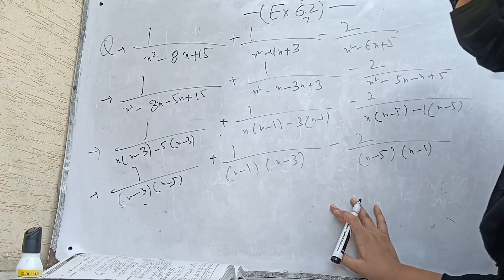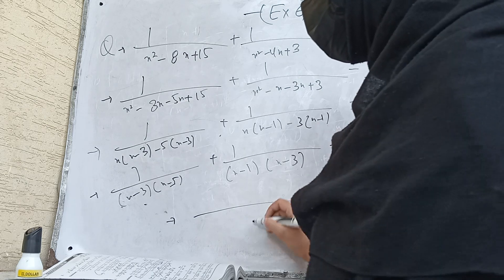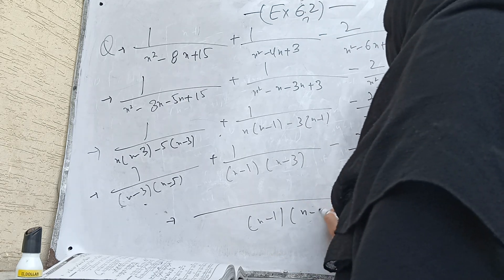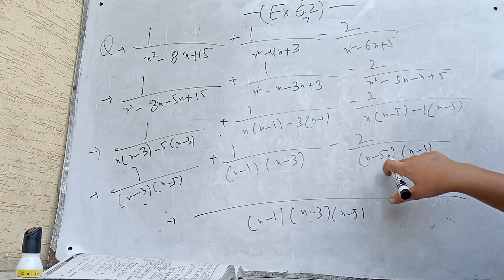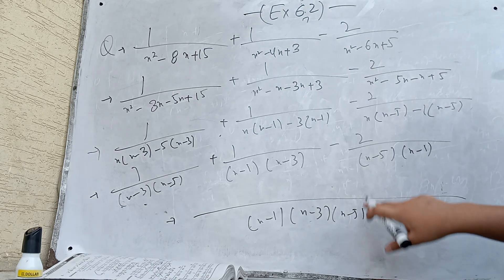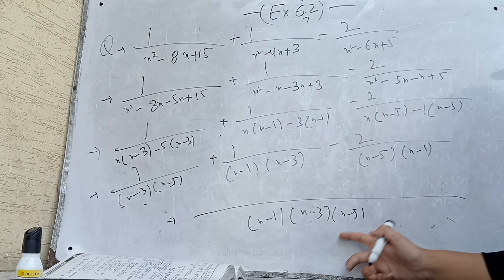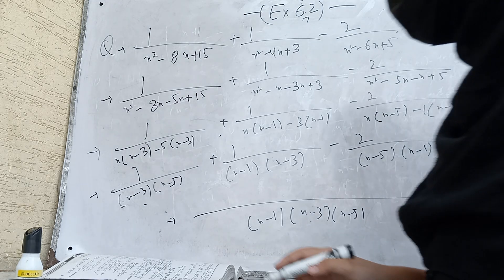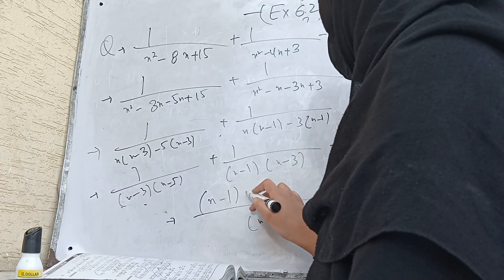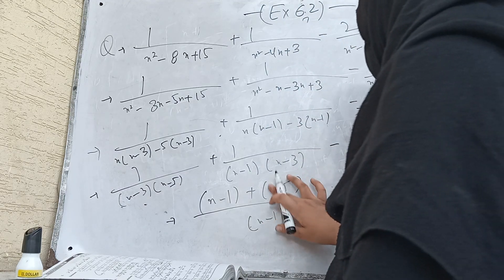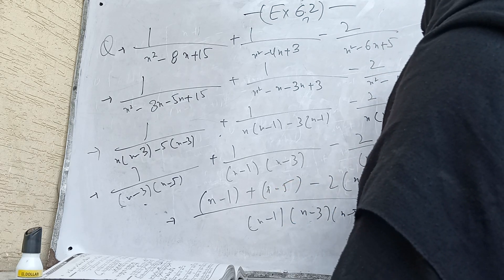All the factors are identified. The LCM is (x-1)(x-3)(x-5), because (x-1), (x-3), and (x-5) each appear twice, so we write each only one time in the LCM.